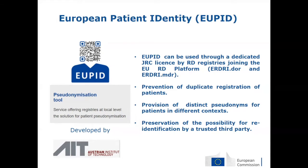We chose UPIT as the pseudonymization tool for the rare disease registry community joining EIRDRI because it is a robust pseudonymization method. It offers key characteristics such as the prevention of duplicate registration of patients, the provision of distinct pseudonyms for patients in different contexts, and the possibility to re-identify the patient by a trusted third party.